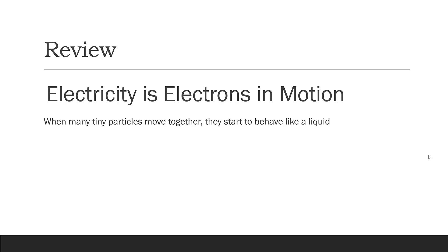In a previous video, we talked about what electricity is, and we said that electricity is electrons in motion. Now, an electron is a little tiny particle, and when you have electricity flowing, usually you have many of those tiny electrons flowing all together. And when many particles move together, they start to behave almost like a liquid. In fact, we even use some of the same words to describe electricity and liquids.